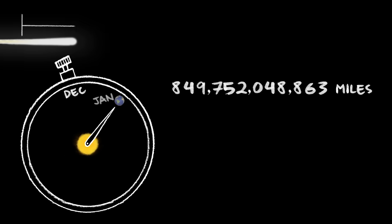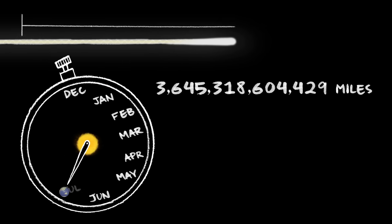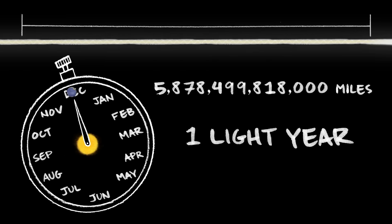Light is the fastest thing we know. It's so fast that we measure enormous distances by how long it takes for light to travel them. In one year, light travels about six trillion miles, a distance we call one light year.